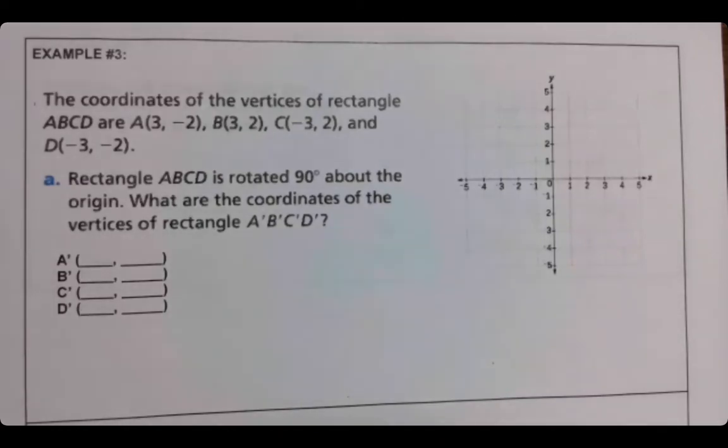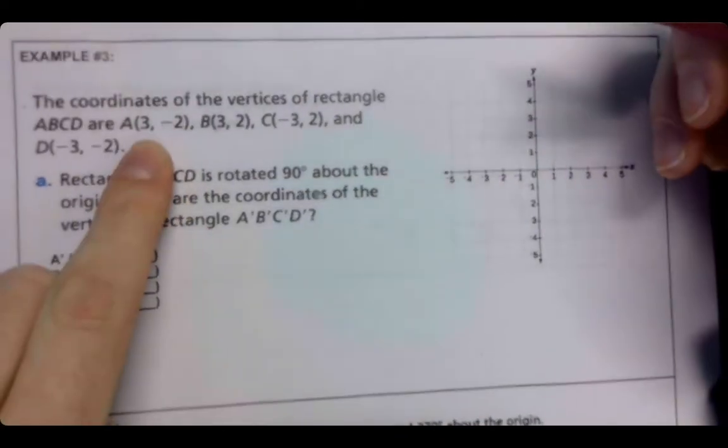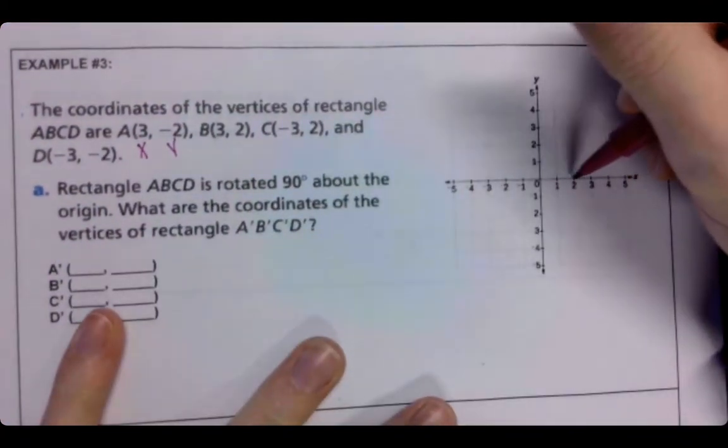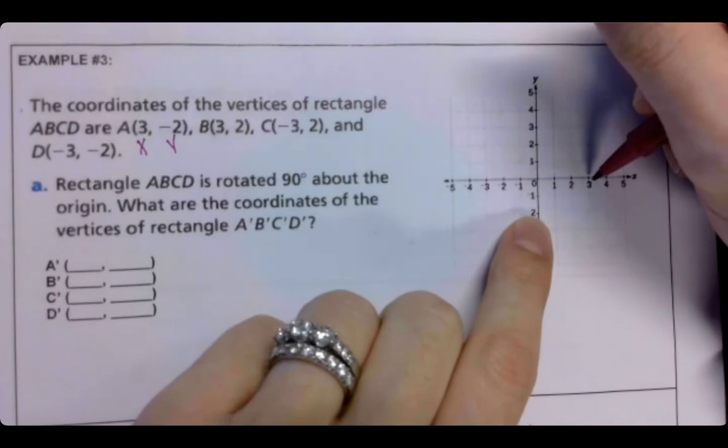So let's plot our point first. So 3, negative 2, remember it's always x comma y, so we find 3 on the x-axis, negative 2 on the y-axis.